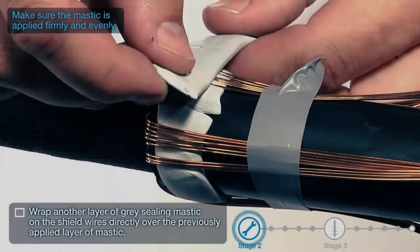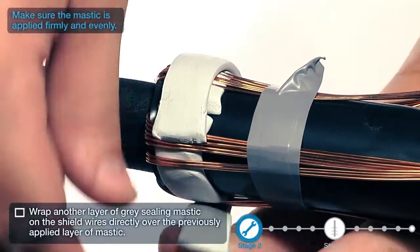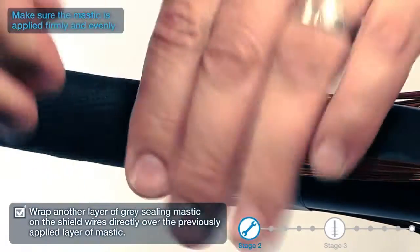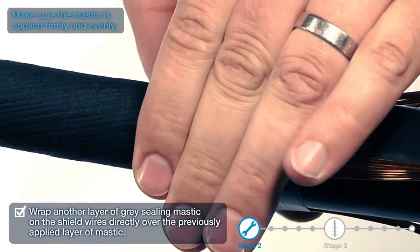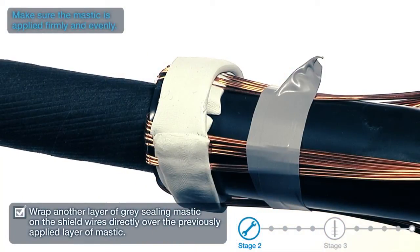Wrap another layer of grey sealing mastic on the shield wires directly over the previously applied layer of mastic. Make sure the mastic is applied firmly and evenly.